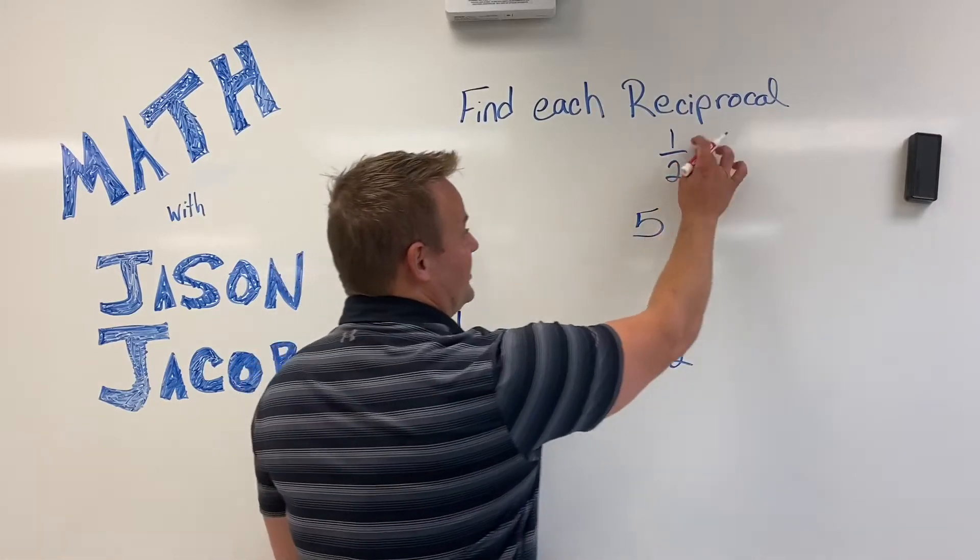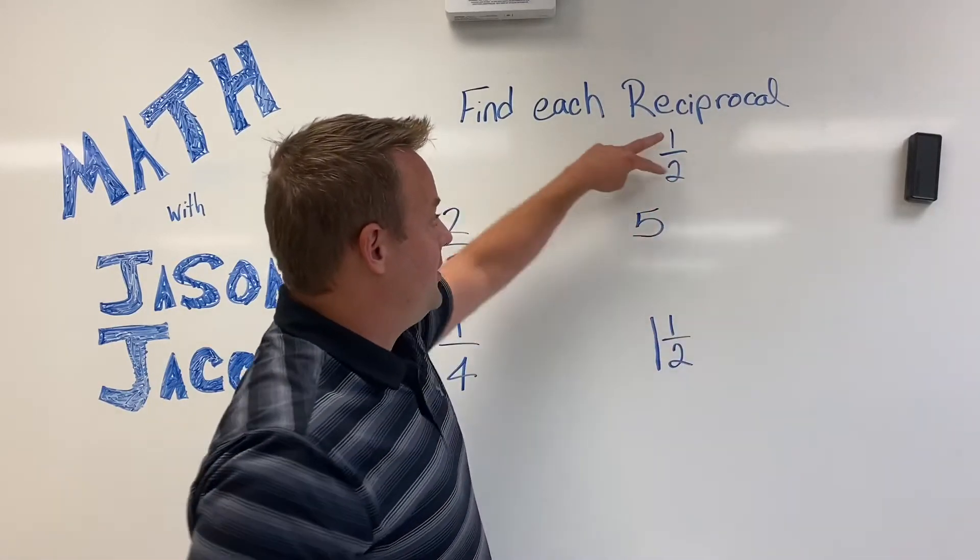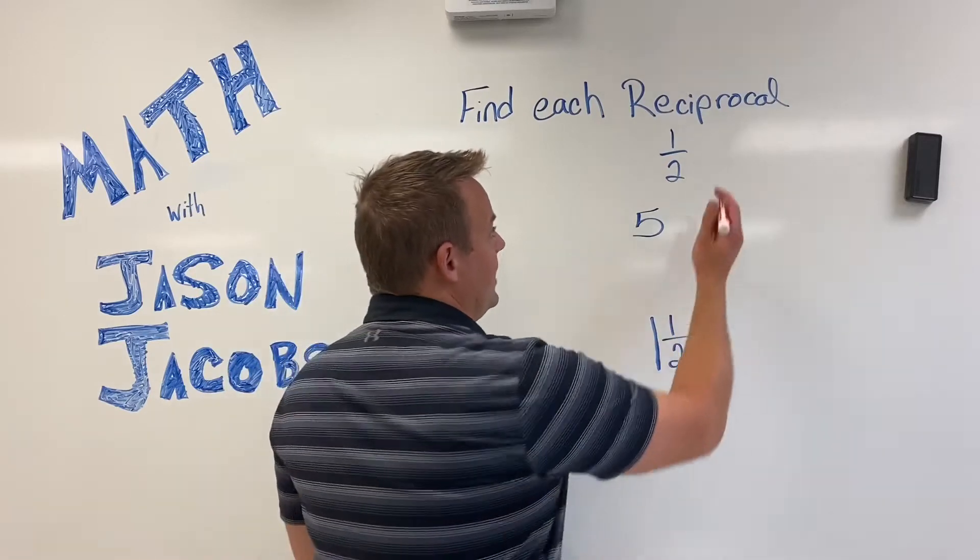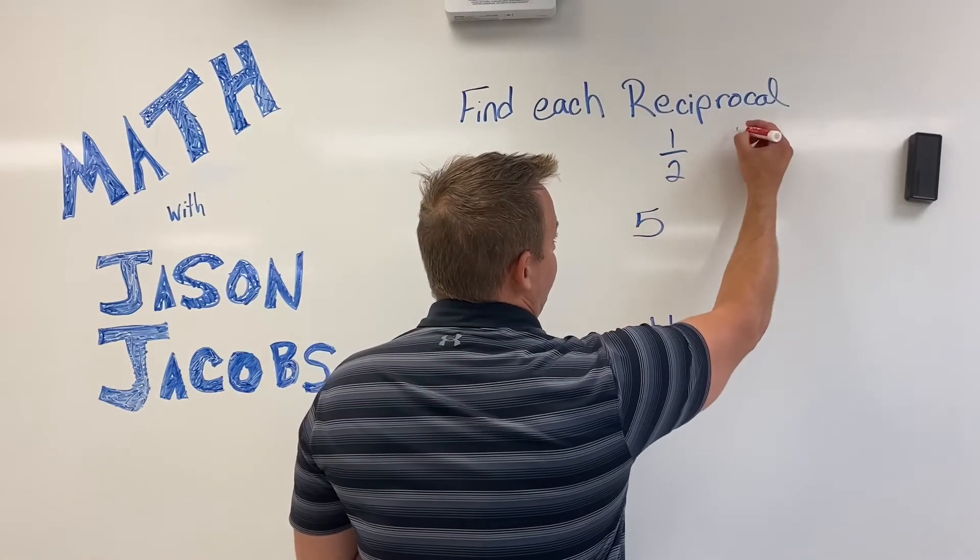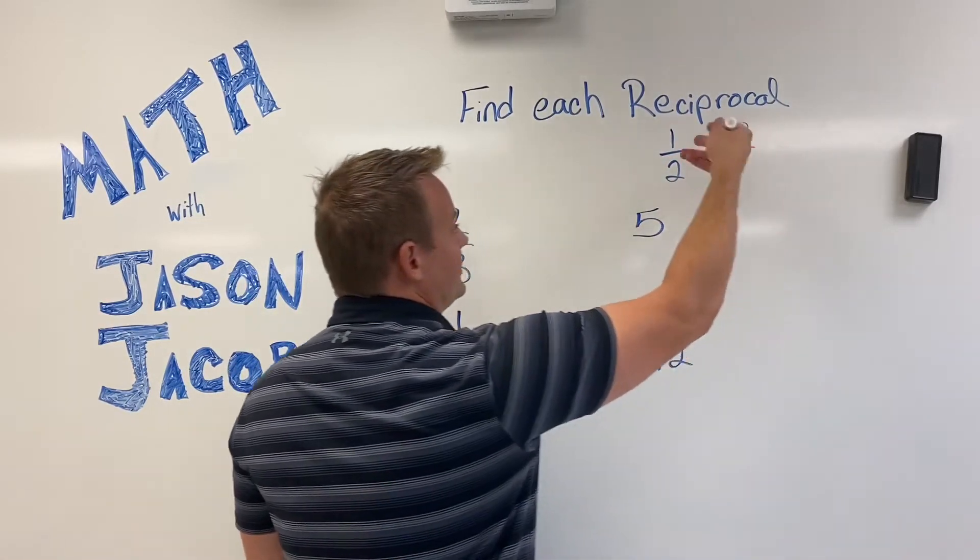So, what's the reciprocal of one half? Well, that's where the numerator and denominator, you just flip them. So, the reciprocal of one half is two over one. Notice they just flipped.